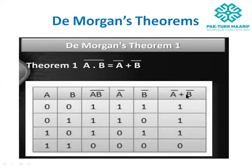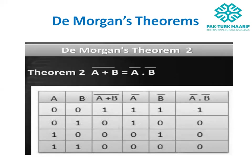Now A' + B' (right-hand side): 1+1=1, 1+0=1, 0+1=1, 0+0=0. The left-hand side (A·B)' gives 1, 1, 1, 0 and the right-hand side A' + B' also gives 1, 1, 1, 0 — both are equal. De Morgan's first theorem is proved.